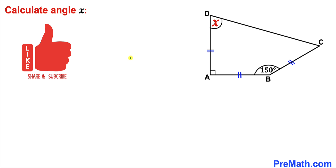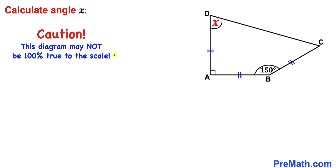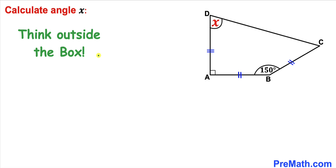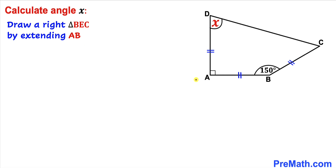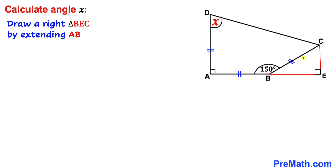Please note that this figure may not be 100% true to scale, as we are dealing with a tricky kind of problem, so we are going to think outside the box. Our very first step: let's extend line AB and drop a perpendicular, giving us a right angle at point E. This gives us right triangle BEC with a 90-degree angle at E.